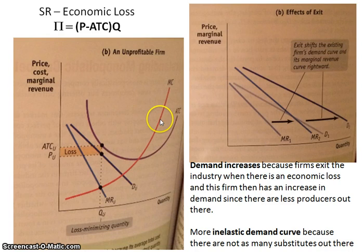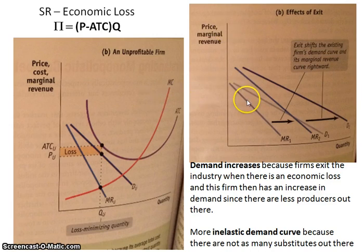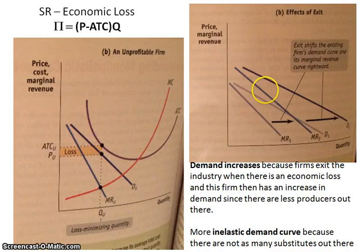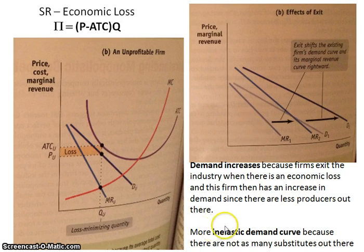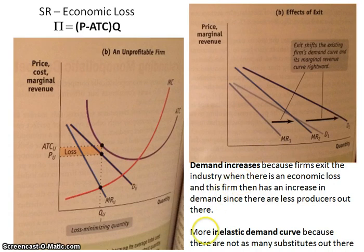There's a loss, so because of the ease of entry and exit, firms will exit this industry because they can't survive. As they exit, for the firms that remain, there's going to be an increase in demand for their goods because there aren't as many substitutes available. So the demand curve shifts to the right, and when demand shifts, the marginal revenue curve shifts as well.